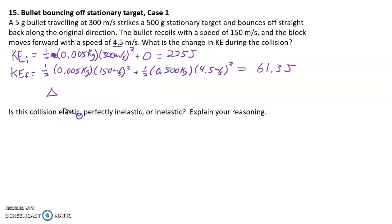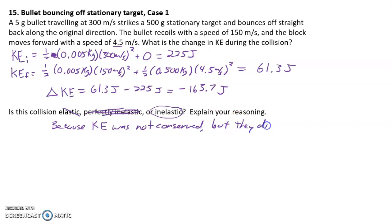And so we can see that it's not going to be elastic because we have a lot of energy loss. The change in kinetic energy, always final minus initial, 61.3 minus 225. And so it's a negative value, negative 163.7 joules. So we lost a lot of energy, maybe something like 80 percent. We know it's not perfectly inelastic because the bullet bounced off, and so we're left concluding that it's inelastic because kinetic energy was not conserved, but they did not stick together.